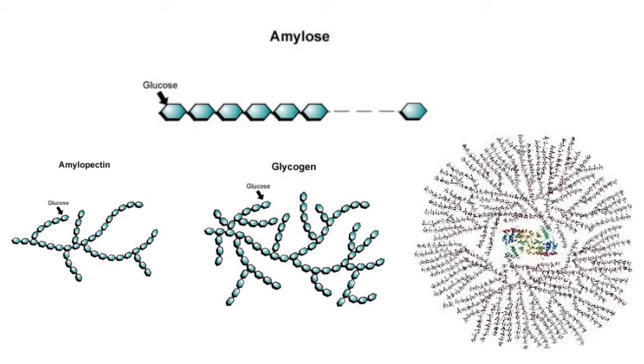Amylopectin is the branched structure, as shown on the left side. When you take in food with a large amount of amylopectin, it is digested rapidly. Talking about being branched, glycogen is even more branched than amylose and amylopectin, as the picture shows in the middle and at the right side. This is how complicated and branched glycogen can be.